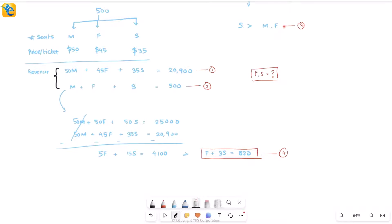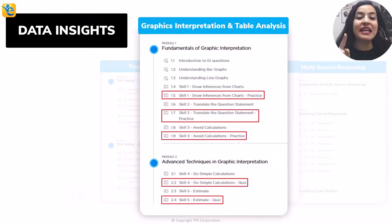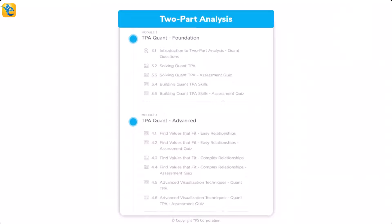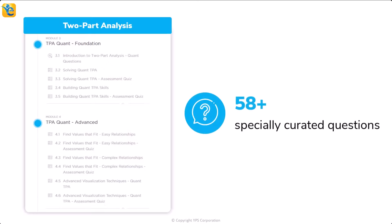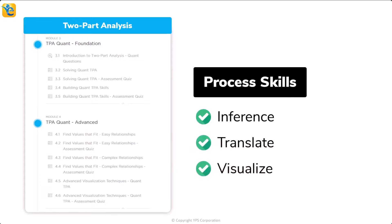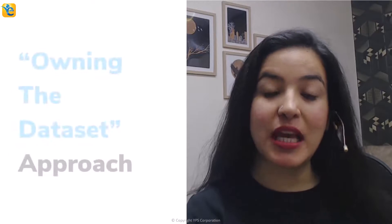Let me ask you this: could you have arrived at the approach of solving this question with this level of clarity had you not spent the effort in thoroughly understanding the information presented? Such is the power of the process of owning the data set. Because this skill may not come naturally to many of you, we have created a course architecture that ensures we teach you this skill. In the TPA quant modules we teach you how to get comfortable with this question type. Throughout the DI course, through around 500 questions, you will learn such process skills.